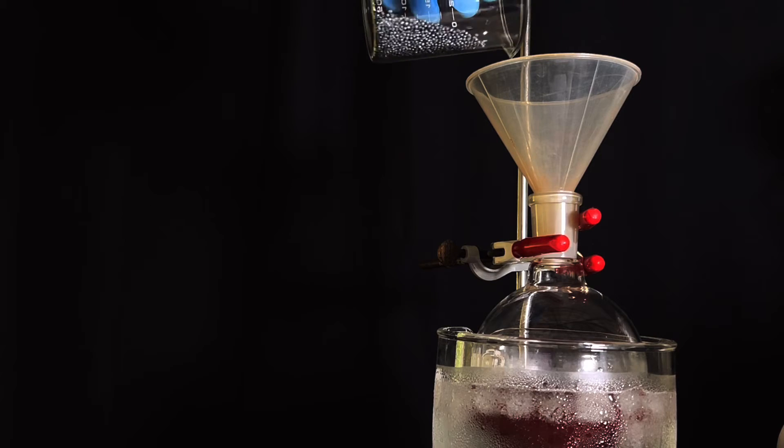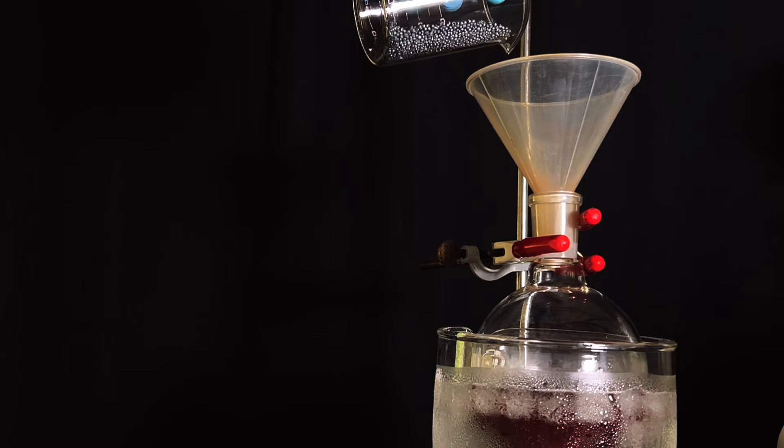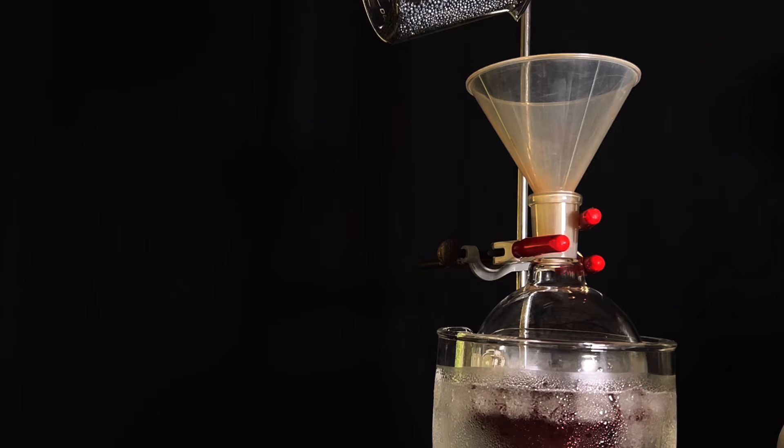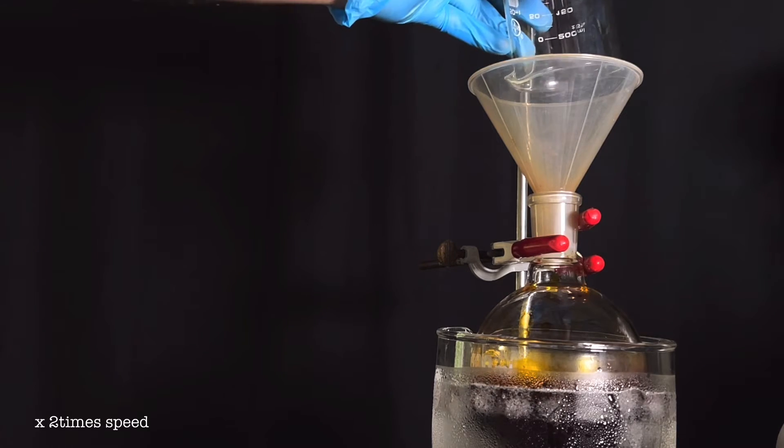Next using a powder funnel, 83.3 g of iodine crystals were transferred to the chilled methanol. Iodine crystals quickly dissolve in methanol and the resultant solution is deep red to almost black in color.